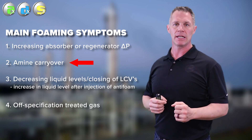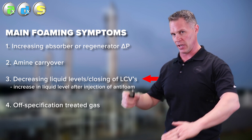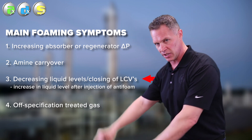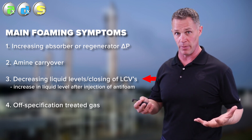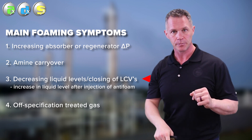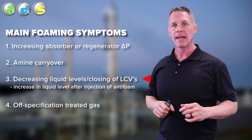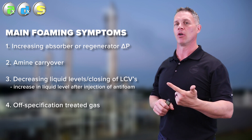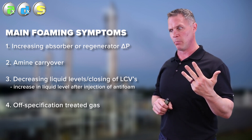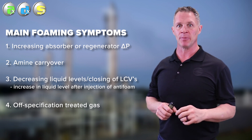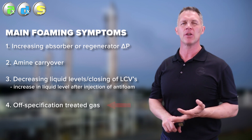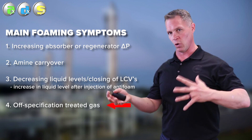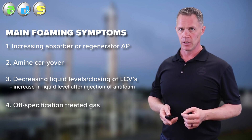The third symptom is a decrease in liquid level at the bottom of the tower — or, especially in absorbers with a level control valve, a closing of that valve. When amine is foaming, the foam wants to go up, not down, so we start starving the bottom of the tower and the level control valve reacts right away. The fourth symptom, which most plants act before reaching, is going off-spec on treated gas — especially for plants trying to meet an H2S spec — because H2S does not absorb into foaming amine.